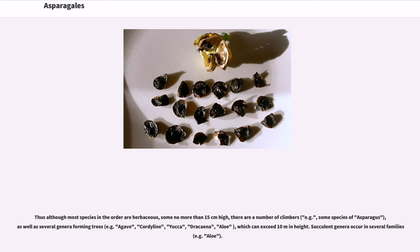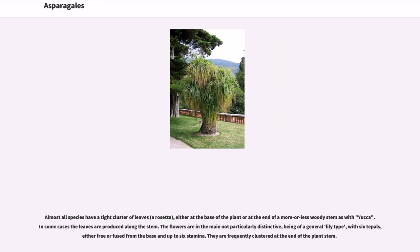Although most species in the order are herbaceous, some no more than 15 cm high, there are a number of climbers — for example, some species of asparagus — as well as several genera forming trees, for example agave, cordyline, yucca, dracaena, and aloe, which can exceed 10 m in height. Succulent genera occur in several families, for example aloe.